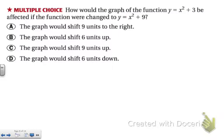So for example, how would the graph of the function y equals x squared plus three be affected if the function were changed to y equals x squared plus nine? So remember, plus three would move it up the y axis by three units, so plus nine would move it up six more units. So the graph would shift six units up.